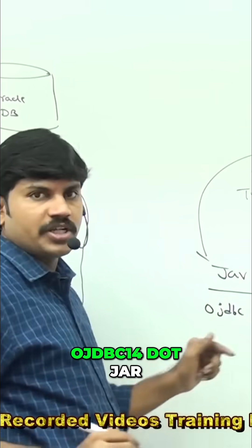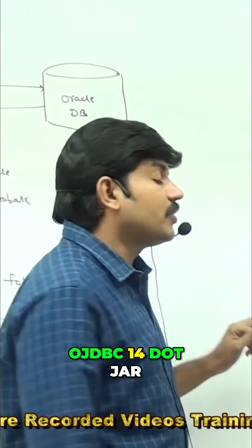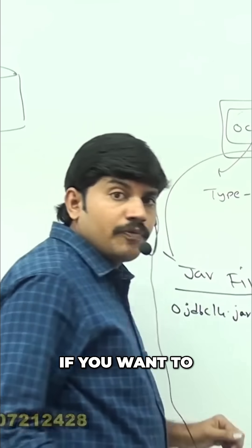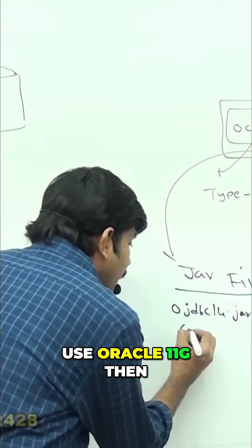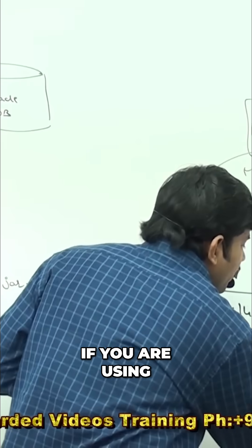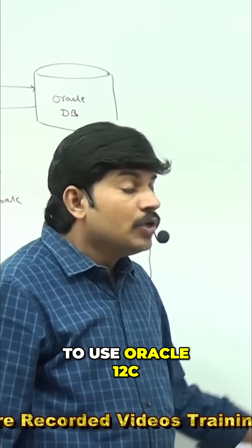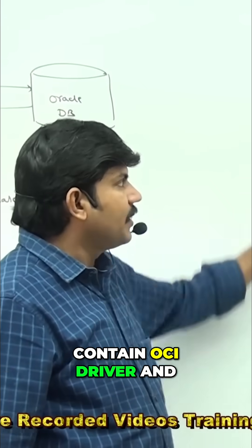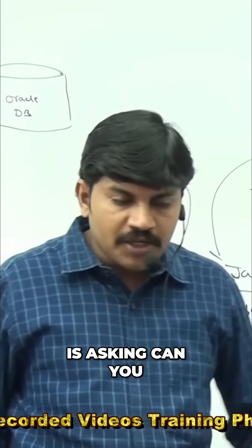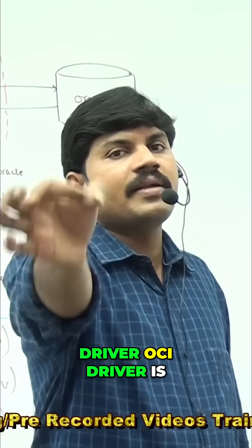If you are using Oracle 10g, use ojdbc14.jar. If you want to use Oracle 11g, then use ojdbc6.jar. If you are using Oracle 12c, which JAR file contains the OCI driver and the corresponding OCI libraries?